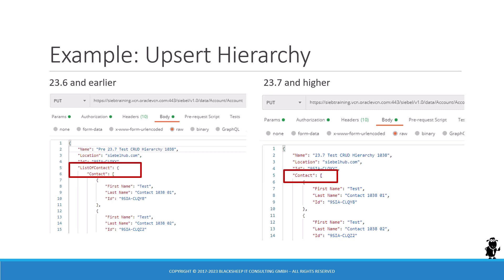The big difference to earlier versions is: just specify a business component name as an array, and that's your hierarchy, which you can use for PUT and POST requests to update or upsert your records. And there you have it — a quick look at the 23.7 enhancement: CRUD operations for hierarchical data in the Siebel REST API. Thanks for watching, take care, and bye bye.